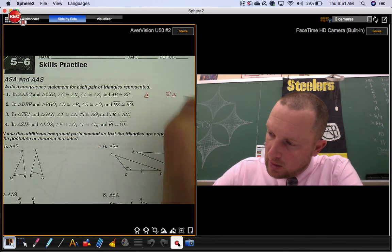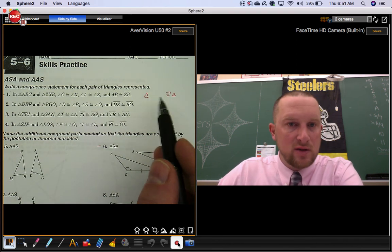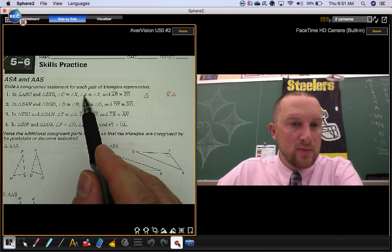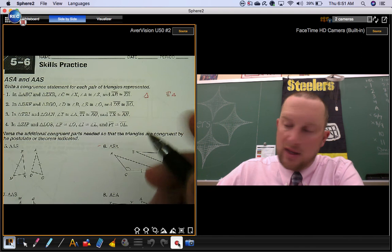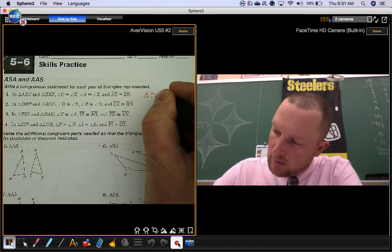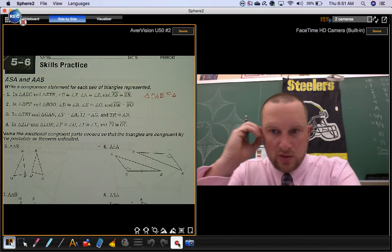So a congruence statement for triangles looks like this. We're just going to fill in the letters. So we have angle C, angle A, and segment AB. That means you have three letters together, C, A, and B. So one triangle is triangle CAB.